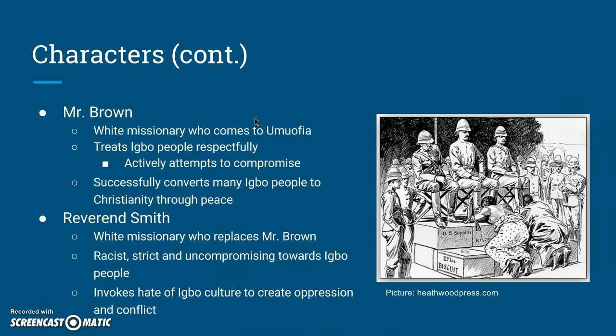Now for the colonial characters. Mr. Brown is the first white missionary to come to Umuofia. He treats Igbo culture very respectfully, actively works to compromise with them, builds schools and hospitals, and successfully converts many Igbo people to Christianity through peaceful means. Reverend Smith, who replaces Mr. Brown, is by contrast a racist, strict, and xenophobic man. He does not respect Igbo culture at all and actively hates it, instigating much of the conflict in the novel simply because of his contempt — believing the Igbo people should be grateful for receiving the gift of Christianity.